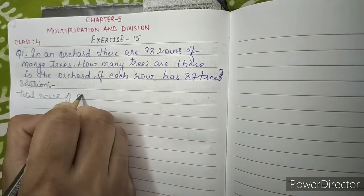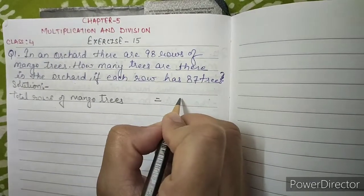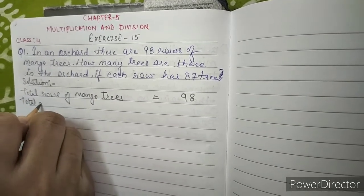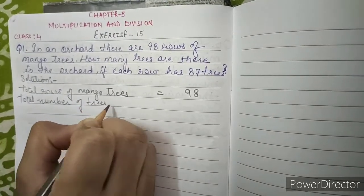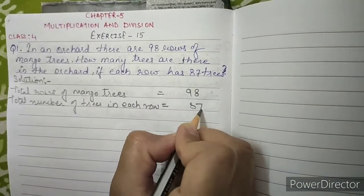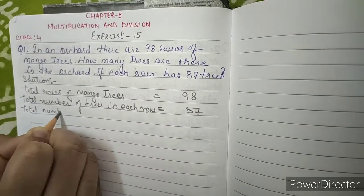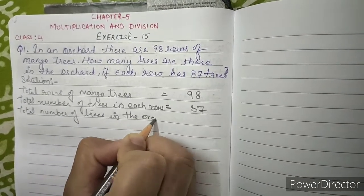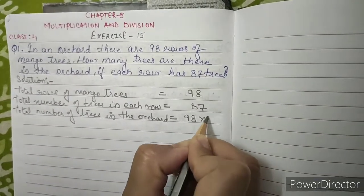Solution: Total rows of mango trees equals 98. Total number of trees in each row equals 87. The total number of trees in the orchard equals 98 into 87.